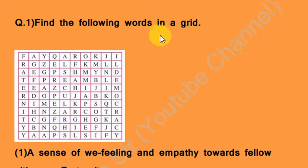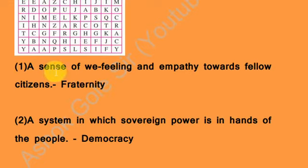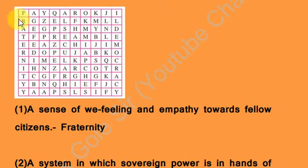Question number 1 is: find the following words in a grid. We have to find some words from this grid or table, and we are given clues here. A sense of warmth, feeling, and empathy towards fellow citizens — the meaning of this is called fraternity. So we have to find 'fraternity' in this grid. Let us see where fraternity is.